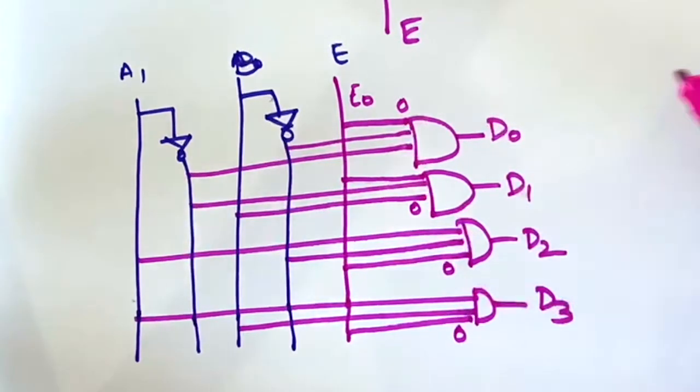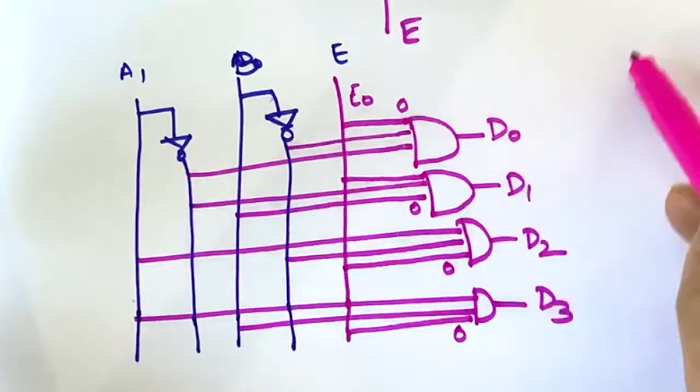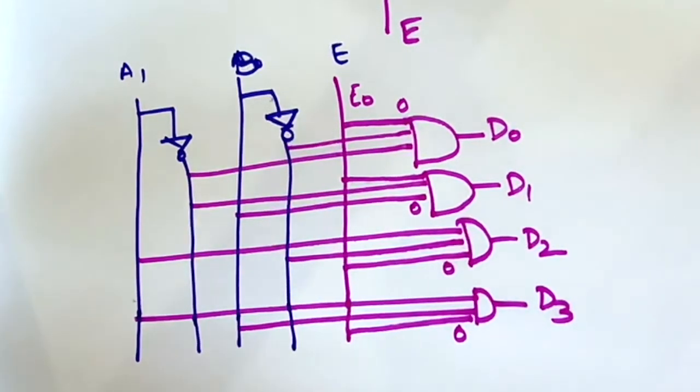So all the AND gates are disabled, they are not working. The whole circuit is disabled when E equal to 0. When enable, the value of enable is 0, then the decoder will not function.